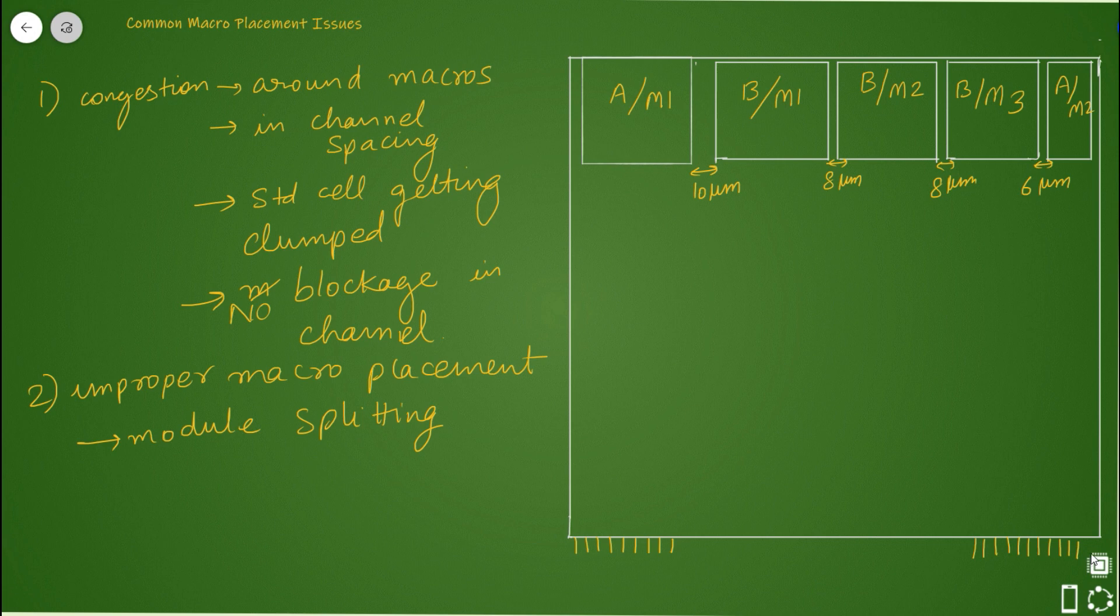One very important thing to note: module splitting can sometimes lead to timing violations. Sometimes you're not facing congestion, but there are still long running paths going over the design - from A/M1 to A/M2 or A/M2 to A/M1. Because of bad macro placement,